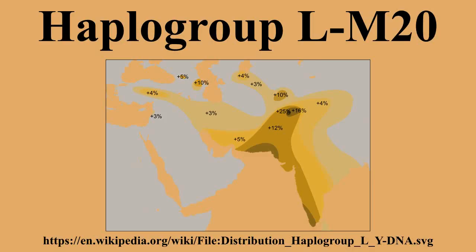There are several confirmed and proposed phylogenetic trees available for haplogroup L M20. The scientifically accepted one is the Y Chromosome Consortium tree published in Karafet 2008 and subsequently updated. A draft tree showing emerging science is provided by Thomas Krahn at the Genomic Research Center in Houston, Texas. The International Society of Genetic Genealogy also provides an amateur tree.